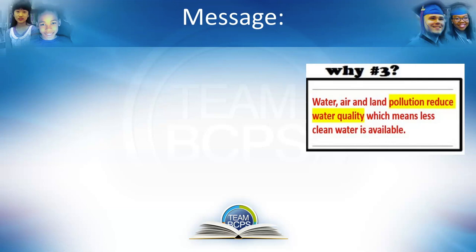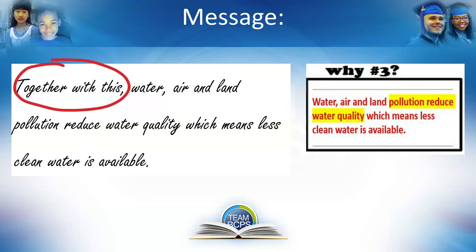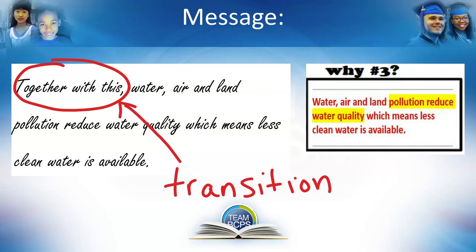Let's move on to reason number three. We said water, air, and land pollution reduce water quality, which means less clean water is available. Again, look at the beginning of this sentence — what do you think these three words are? 'Together with this.' That's right. This is another transition phrase that connects the last sentence with this sentence.